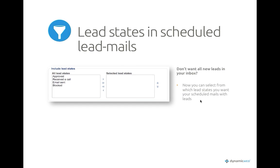Another thing we've introduced is lead mails that you can schedule to receive, for instance, every day. Now you won't get every lead that enters the website, but you can select only to get leads in a certain lead state — for instance, approved or email sent — so this applies to the scheduled lead mails on the website.